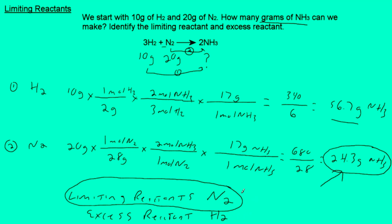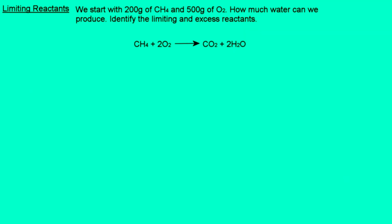We have tons of extra hydrogen, but we're going to end up running out of nitrogen first. Once we run out of nitrogen, that's it — the reaction stops. It's over. So whatever is the smaller of the two, that's your answer. This came from the nitrogen. Nitrogen is our limiting reactant. We're going to end up making 24.3 grams of ammonia.